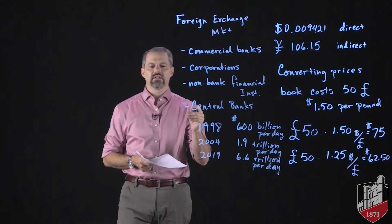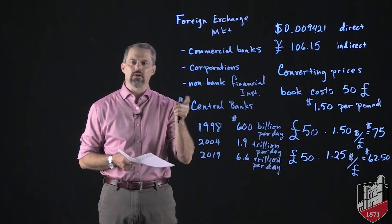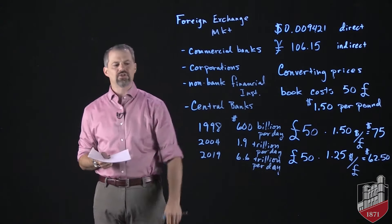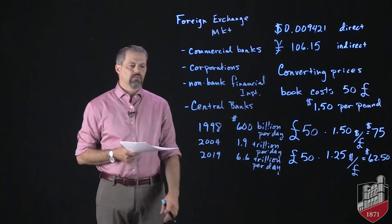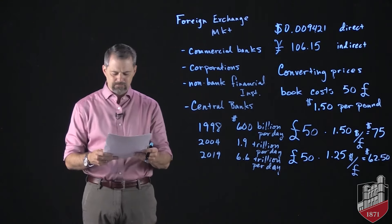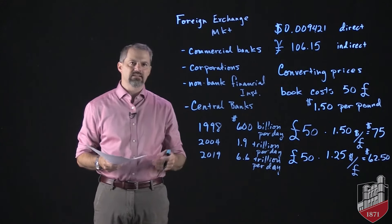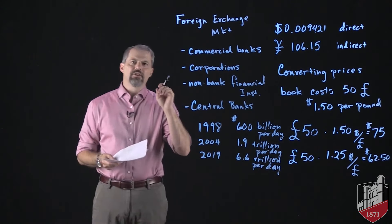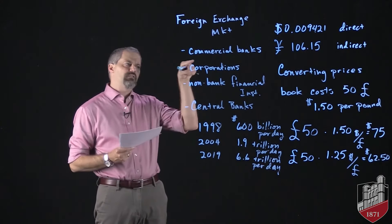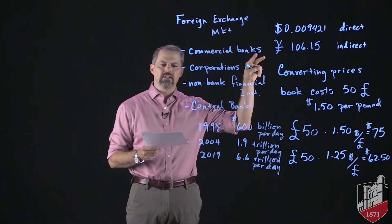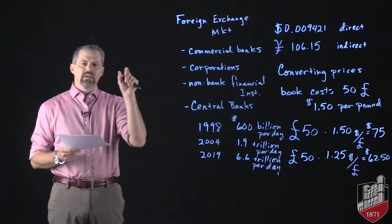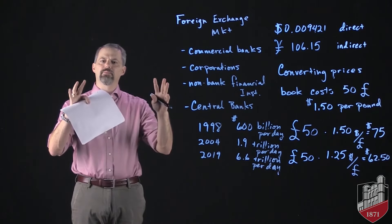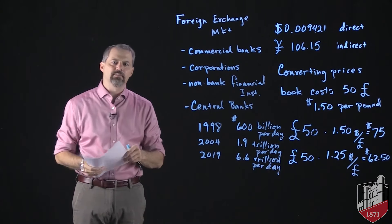Unlike the New York Stock Exchange, which opens and closes during weekdays, in the foreign exchange market there's no closing time — there's no part of the day when foreign currencies are not being traded. The major markets are the US, London, Frankfurt, Singapore, and Tokyo. Because of this, there's no opportunity for a difference between the exchange rate for two currencies in one country versus another — if such a difference existed, people would arbitrage it by buying where the price is lower and selling where it's higher, causing any differences to vanish relatively quickly.